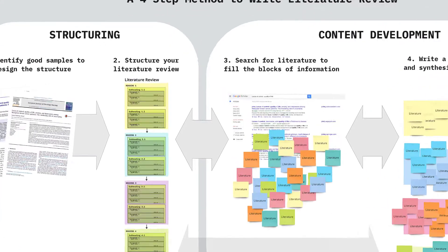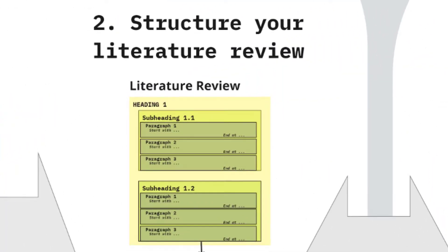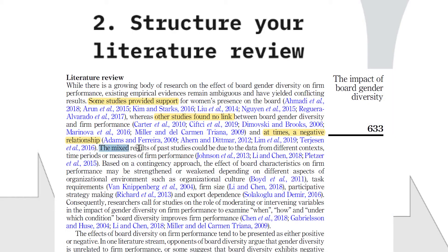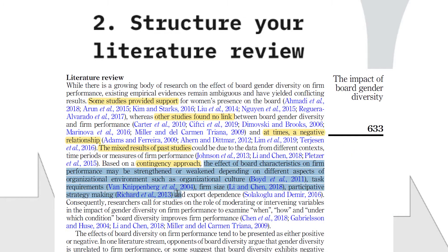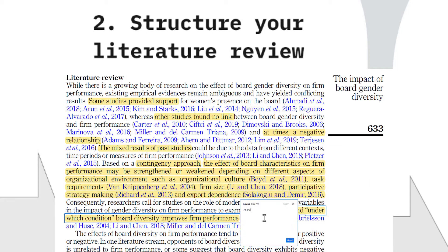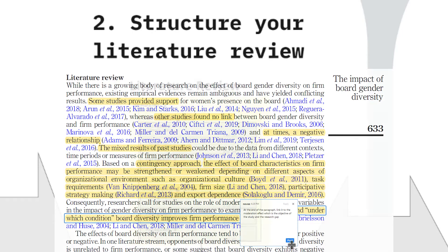Step two — structure your literature review. After identifying a few good samples, you need to carefully analyze the structure of their literature reviews. Based on your analysis, you can then design the structure, storyline, and flow of your own literature review, taking inspiration from the structure of the selected samples.